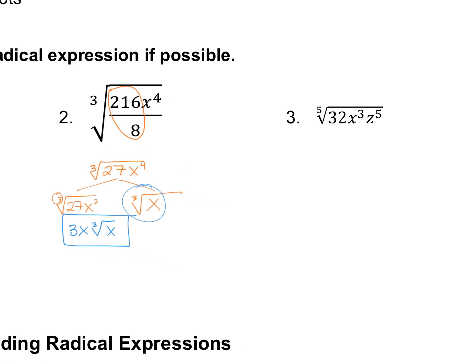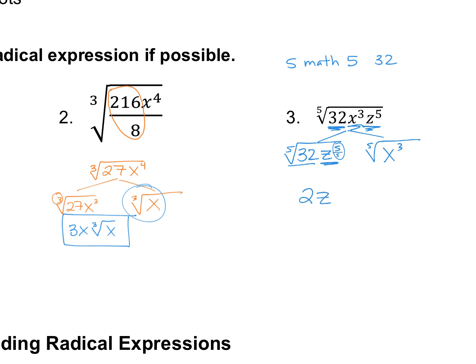Number three is a fifth root, and some of this you can take the fifth root of and some you can't. For 32: try math five, 32 on your calculator — you can take a fifth root of 32, it works out to two. So all of 32 goes on the perfect side. Can you take the fifth root of X to the third? No. Can you take the fifth root of Z to the fifth? Yes, that's the perfect one. The fifth root of 32 is two; Z to the five over five is one, leaving just Z; and then you have the fifth root of X cubed remaining. That's your answer.